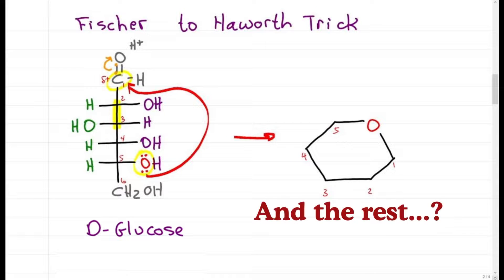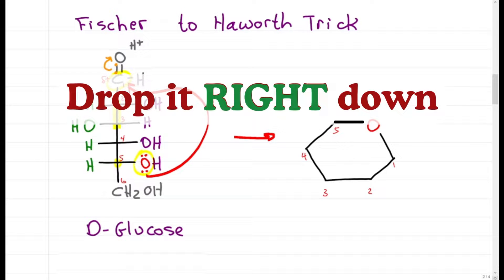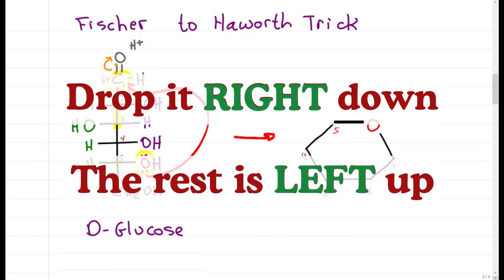What about everything else? This is where it can get tricky, or does it? The easiest way to go from linear to horizontal is to take a look at your Fischer and 1, drop it right down, 2, the rest is left up.